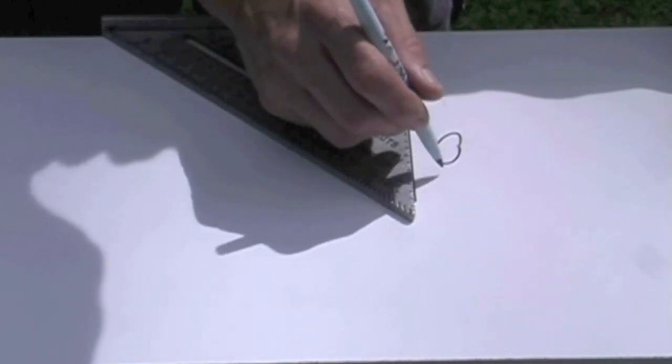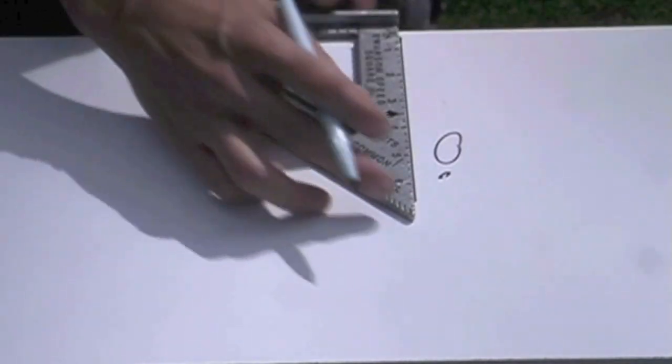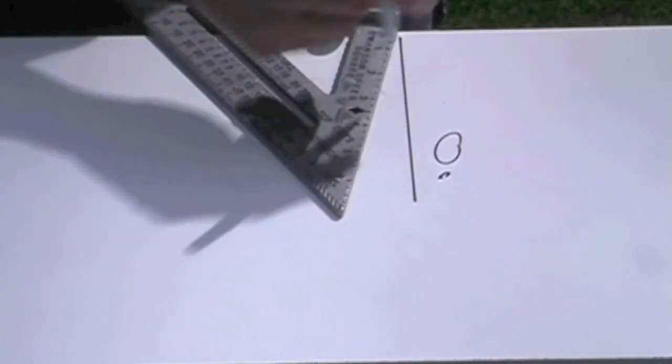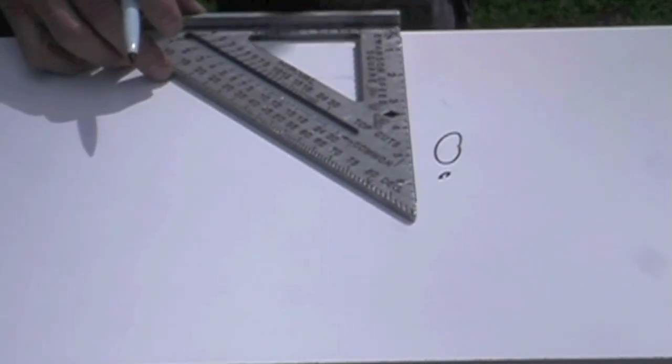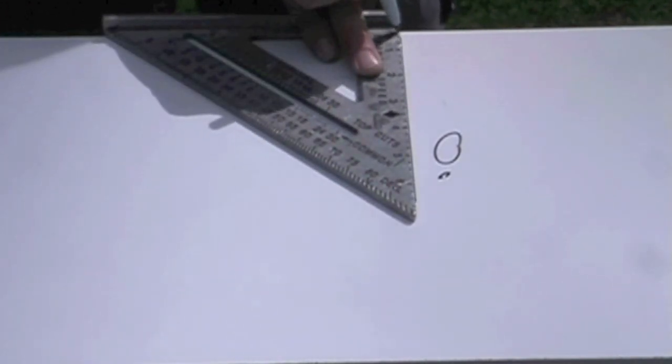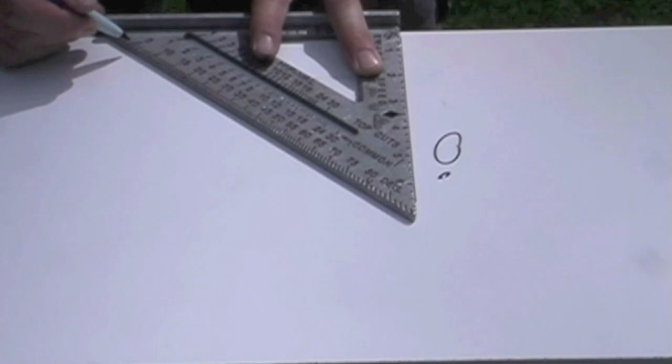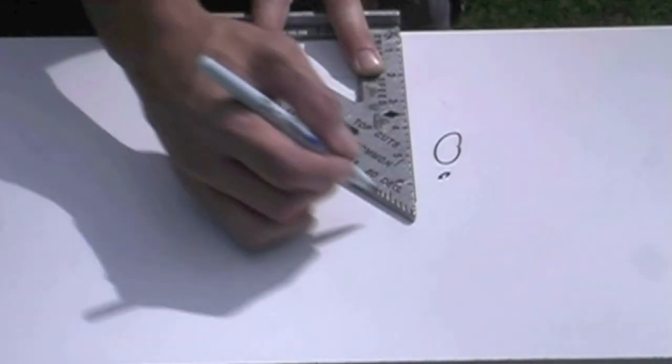But if I start off with this at zero, and I turn this side, then I'm going to get my degrees of angle, and I won't get confused. Starting off with this as zero, you look at this other side. This has degrees from one all the way up to 90.